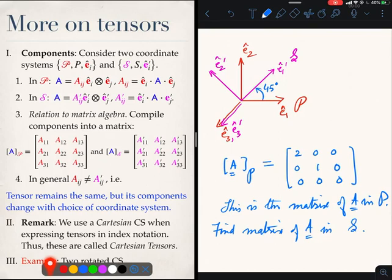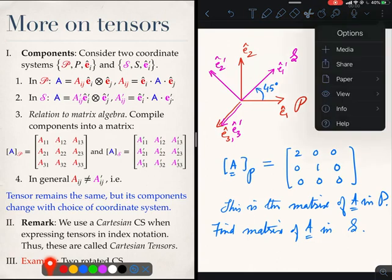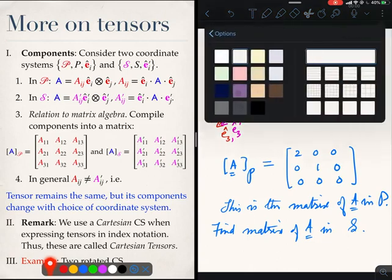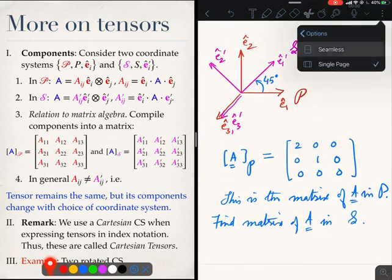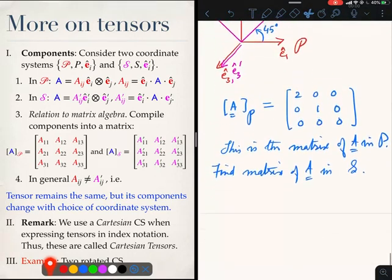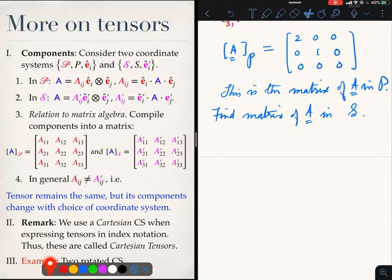We need more space. What we want to do is we want to find aij prime. We have a formula for that, that is Ei prime dot A dot Ej prime.